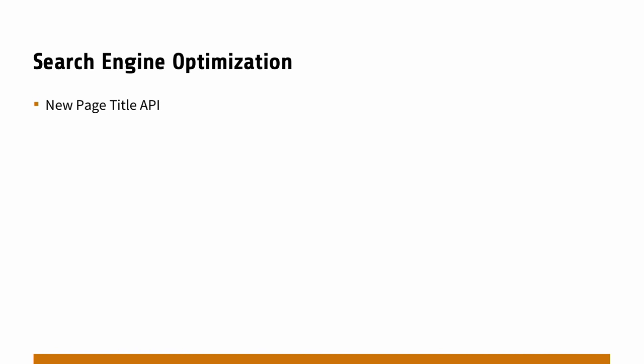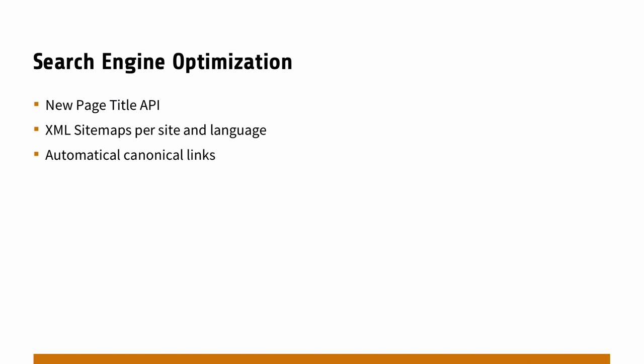The huge thing is that we have a proper page title API. We can create XML site maps per site and language automatically — mind blown. We have automatic canonical links being generated, which is extremely helpful if you're reusing content somewhere else. We have hreflang tags in multilingual sites, which is pretty awesome.